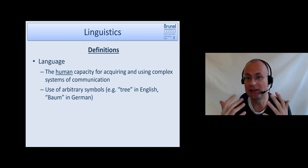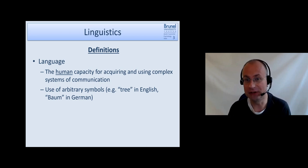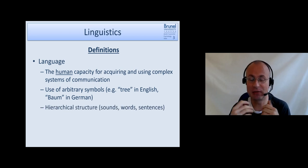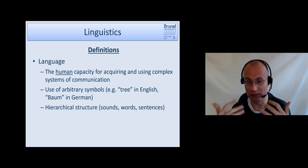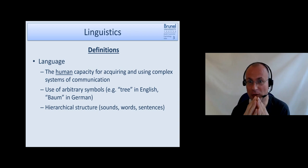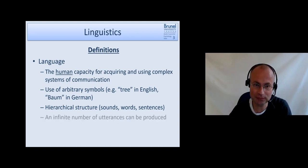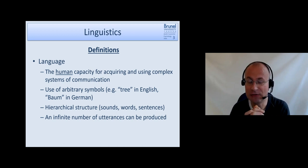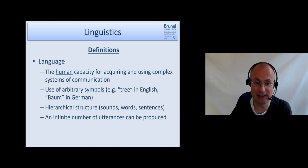For that we usually use arbitrary symbols, which in everyday terms we would call words. For instance, in English we say 'tree' and in German we say 'Baum'. The names are pretty arbitrary to describe this big plant with a trunk and leaves. Language is also characterized by a hierarchical structure. We have small units of sounds which can be combined into words, which then can be combined into sentences. By combining different sounds in different ways and arranging different words in different ways, we can basically create an infinite number of utterances and produce such a variety of language and communication.